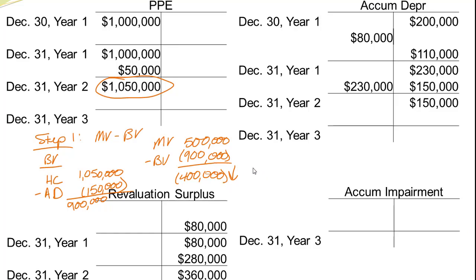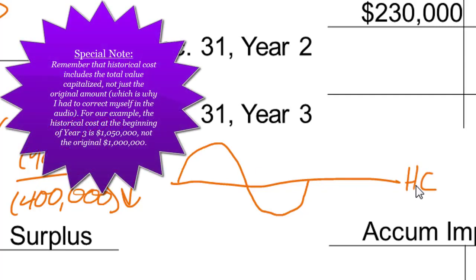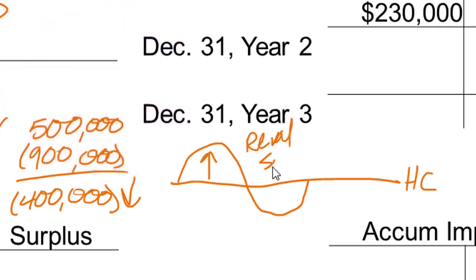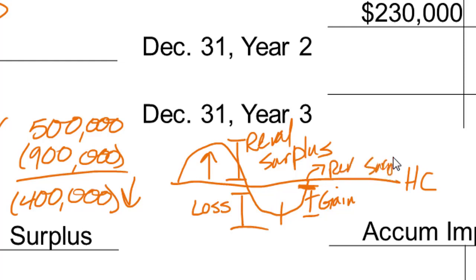Remember the wave concept for recording these values: anything above historical cost goes to revaluation surplus. Coming back down from above to the historical cost line, I can take it out of revaluation surplus. Once I go below the line, I have to record a loss. If the value comes back up from below the line, I can show a gain up to the loss amount, then switch back to revaluation surplus above the line. We've gone from way up high to way down low, so some of this goes to revaluation surplus and some will have to be an actual loss.